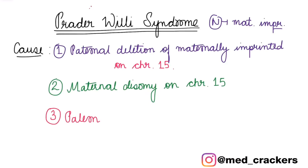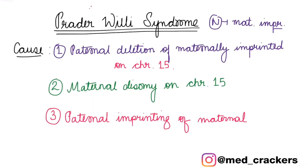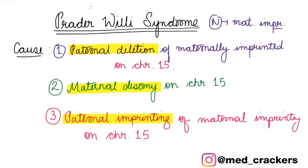The third cause is that there is no deletion and no disomy, but there is imprinting in both chromosomes — the maternal gene is imprinted as normal, and even the paternal chromosome has the imprinting gene pathologically. This gives rise to two imprinted genes and thus no protein. The three causes of Prader-Willi syndrome are: paternal deletion, maternal disomy, and paternal imprinting. Note that deletion and imprinting are different — in deletion the gene is absent, whereas in imprinting the gene is present but made non-functional.